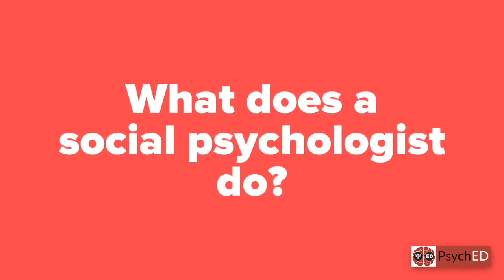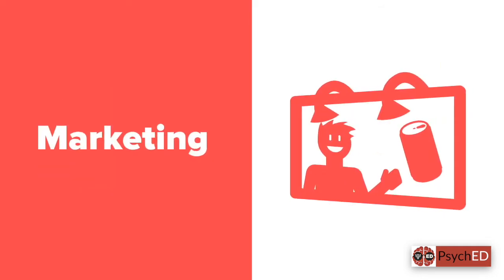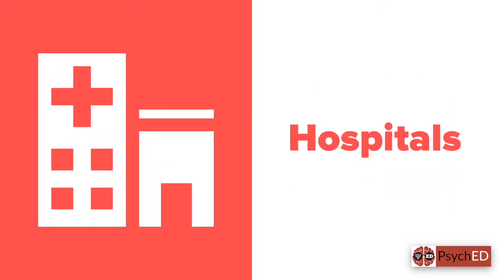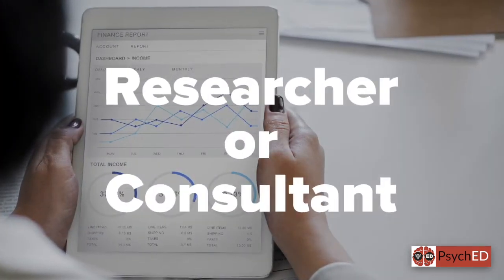What does a social psychologist do? Social psychologists at the PhD level or beyond can teach at universities and other institutions and also conduct scientific research. We also know that social psychologists' findings are heavily used in marketing and promotion areas. For example, why did the background of this video choose to be red? Something to think about. Social psychologists can also work at hospitals and educational institutions as a researcher or consultant.